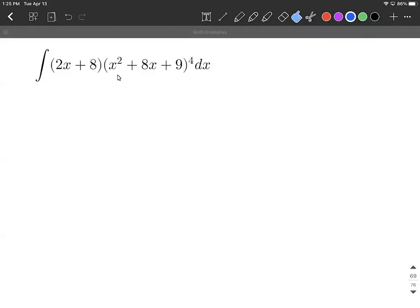All right, let's do some integrating. We've got a kind of complex looking problem given to us: 2x plus 8, that quantity multiplied by the quantity x squared plus 8x plus 9, all raised to the fourth power.